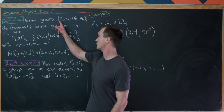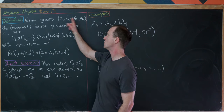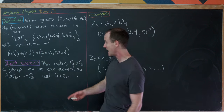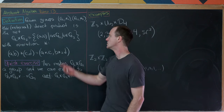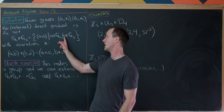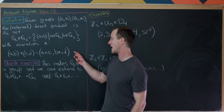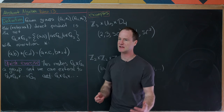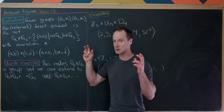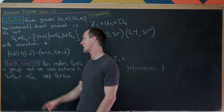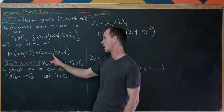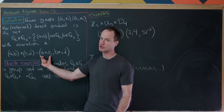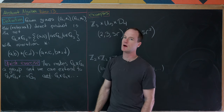Given groups G1 and G2 with their respective operations, their external direct product is the set G1 cross G2 — the Cartesian product of all ordered pairs (a, b) where a is from G1 and b is from G2. We define the operation component-wise: (a, b) star (c, d) equals (a star1 c, b star2 d), using the operation of G1 in the first entry and G2 in the second.